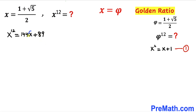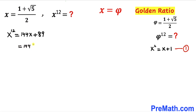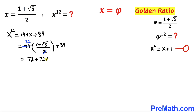For the final step, we replace x on the right-hand side with its value: 1 plus square root of 5 divided by 2. So we have 144 times (1 plus square root of 5) all over 2, plus 89. The 2 and 144 reduce to 72. Distributing 72 gives 72 plus 72 times square root of 5, plus 89. Combining like terms gives 161 plus 72 times square root of 5.